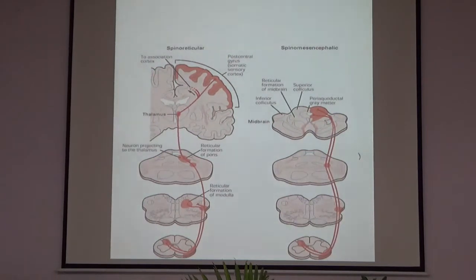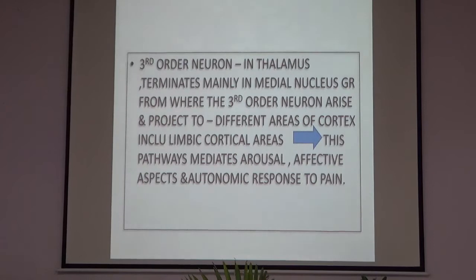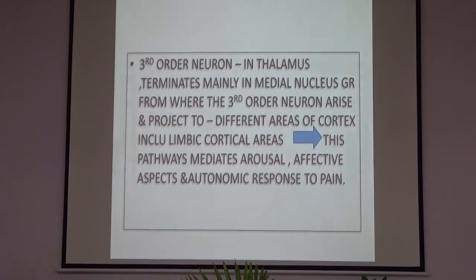You can see in the diagram how the fibers are projecting to the thalamus, then to the neurons projecting to the reticular formation of the pons and medulla, and from there going to the thalamus and then to the association cortex and post-central gyrus, which is the somatic sensory cortex. The third order neuron in the thalamus terminates mainly in the medial nucleus group, from where it projects to different areas of cortex including the limbic cortical areas.